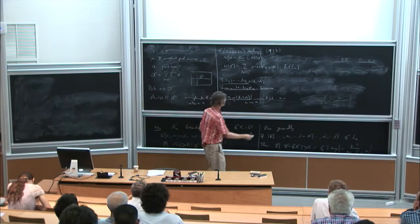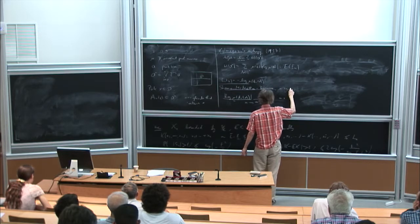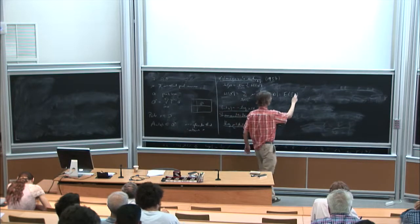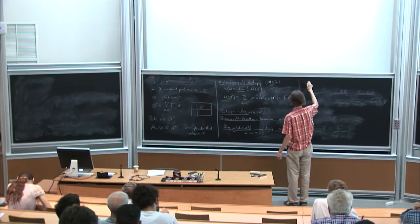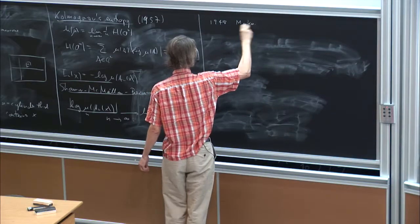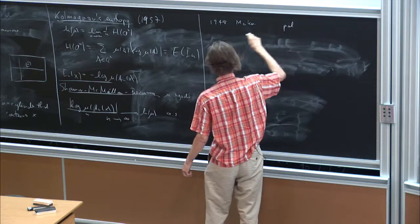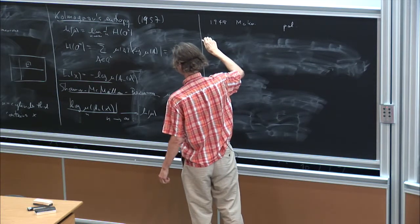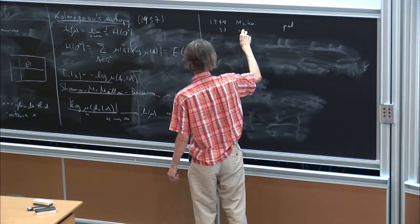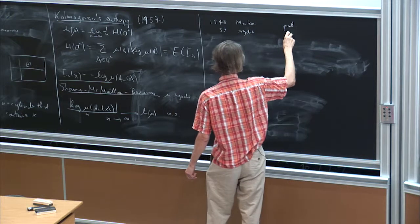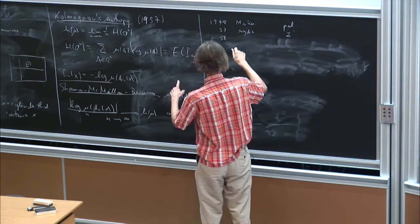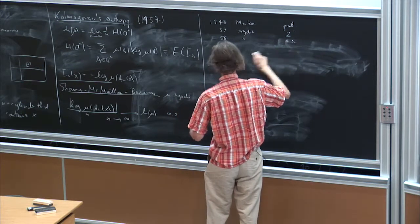Under the provision of course that mu is ergodic, this is sufficient. So historically this actually precedes this one here because it goes back to 1948 for Markov measures and convergence was in probability. Then it was generalized in 57 I believe by McMillan to ergodic measures and convergence into L1, and 58 or 60 by Breiman then to ergodicity and almost sure convergence.